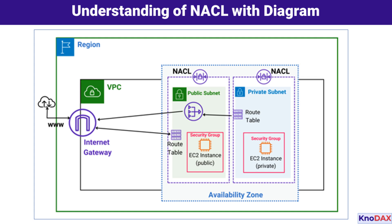NACLs act as firewalls at the subnet level. Unlike security groups, NACLs are stateless, meaning both inbound and outbound traffic must explicitly match a rule to be allowed. Inbound rules define what external traffic is allowed into the subnet — for example, the public subnet's NACL may allow HTTP and HTTPS traffic from the internet to the web server. Outbound rules define what traffic can leave the subnet — the private subnet's NACL may only allow traffic from the database server to the web server. NACLs evaluate rules in numerical order, and if no rule matches, the default rule denies the traffic.